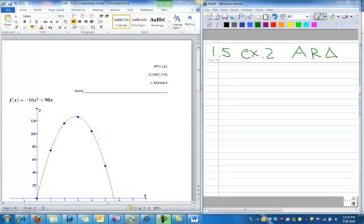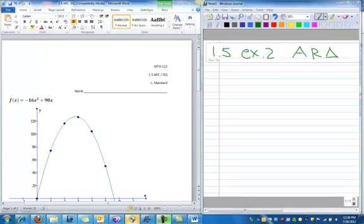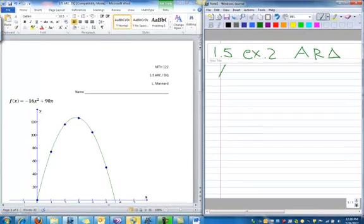Okay, this example is, we're going to call it example 2, and it goes along with section 1.5, and this is our example of average rate of change.